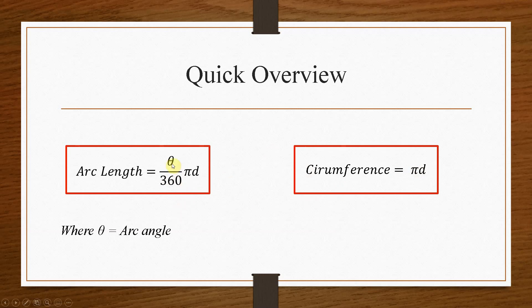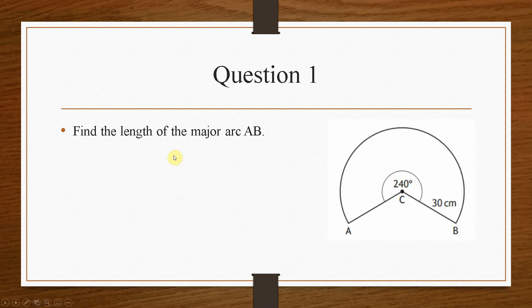So the thing that determines the arc length, essentially, is the value of theta. So if we put this into practice, then question number one asks us find the length of the major arc AB.